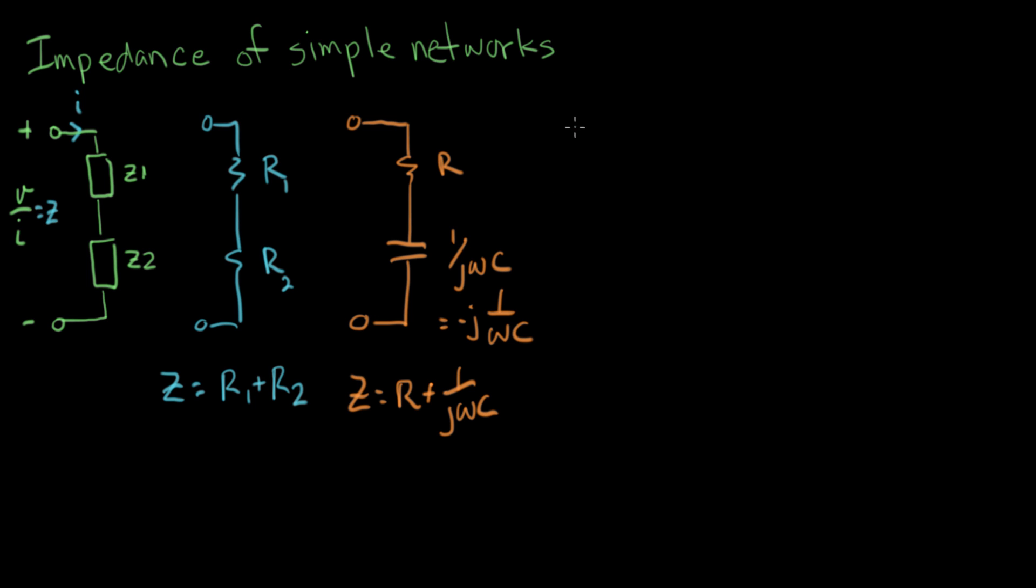Let's do another one. Let's do an inductor combination. So we'll do a resistor and an inductor like that. So the impedance of a resistor is R. The impedance of an inductor is j omega L.